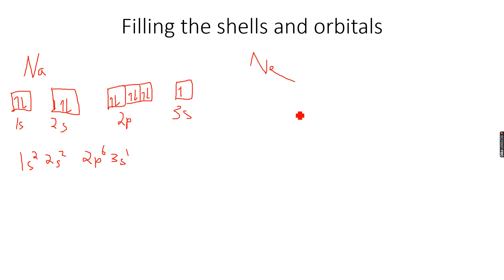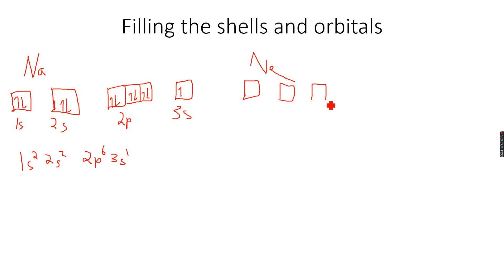If you remember what we did for neon, there's another way of writing electronic configurations — it's a less professional way, so I won't suggest you write it that way. But sometimes it appears in papers, so you need to be able to decipher it. Remember that neon had an electronic configuration like this, with its electrons filled like this.